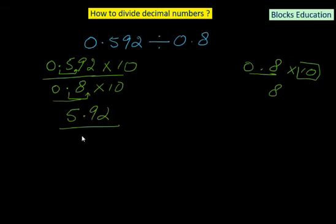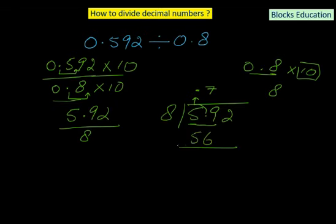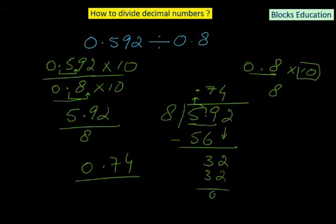So we now have 5.92 divided by 8. The first digit 5 is smaller than 8, so we consider 59. We move the decimal point up to the quotient position. Reading 59, we find 8 × 7 = 56; remainder is 3. Bringing down the 2 gives us 32. Since 8 × 4 = 32, we get remainder 0. The answer is 0.74.